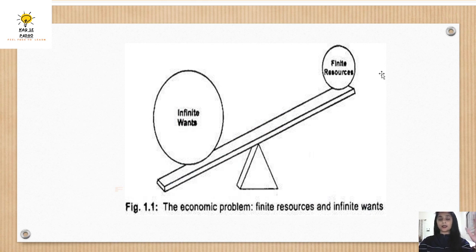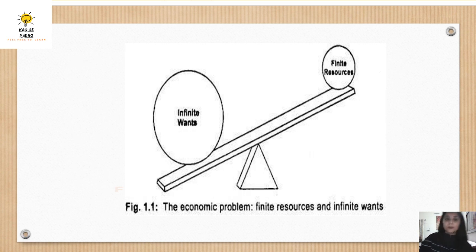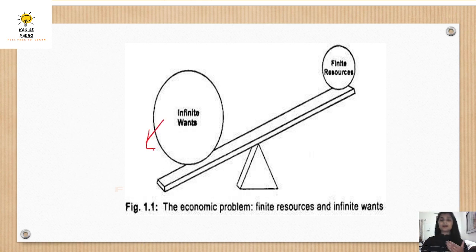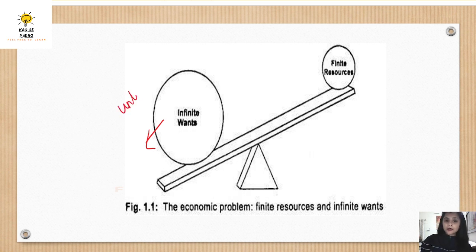First of all, we will discuss that in any economic problem, the problem arises in which way and what the reason is. We all know that human wants are never satisfied, because if one is fulfilled, then another arises. So what we can say is that our wants are infinite, unlimited. And the resources are scarce, limited, finite.